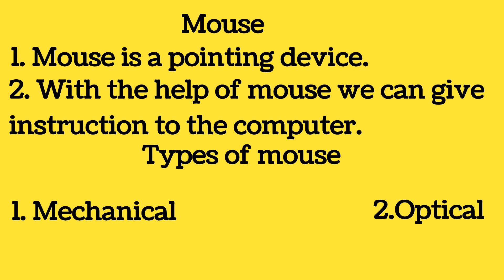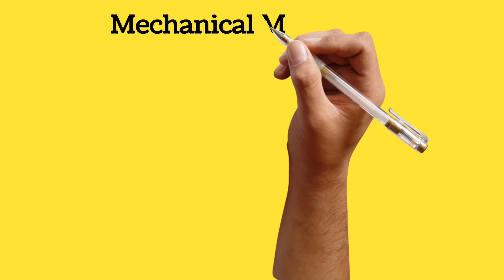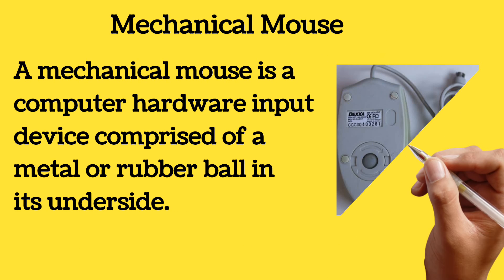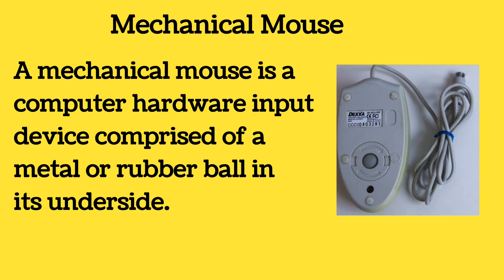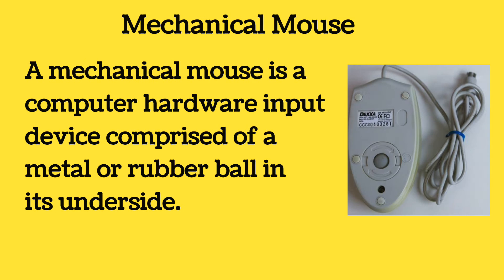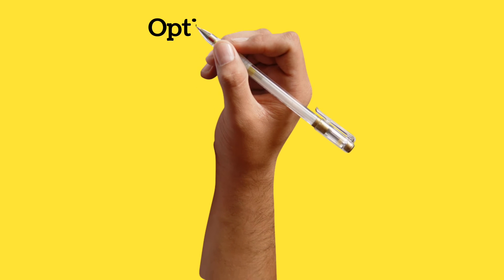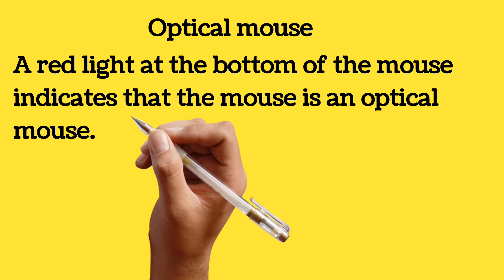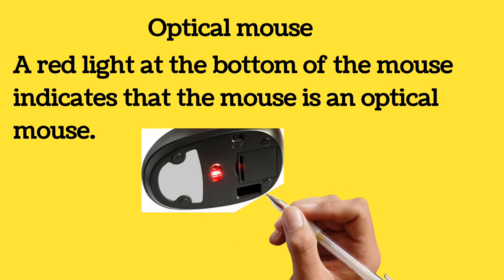Mouse is of two kinds. First, Mechanical mouse: a mechanical mouse is a computer hardware input device comprised of a metal or rubber ball on its underside. Second, Optical mouse: a red light at the bottom of the mouse indicates that the mouse is an optical mouse.